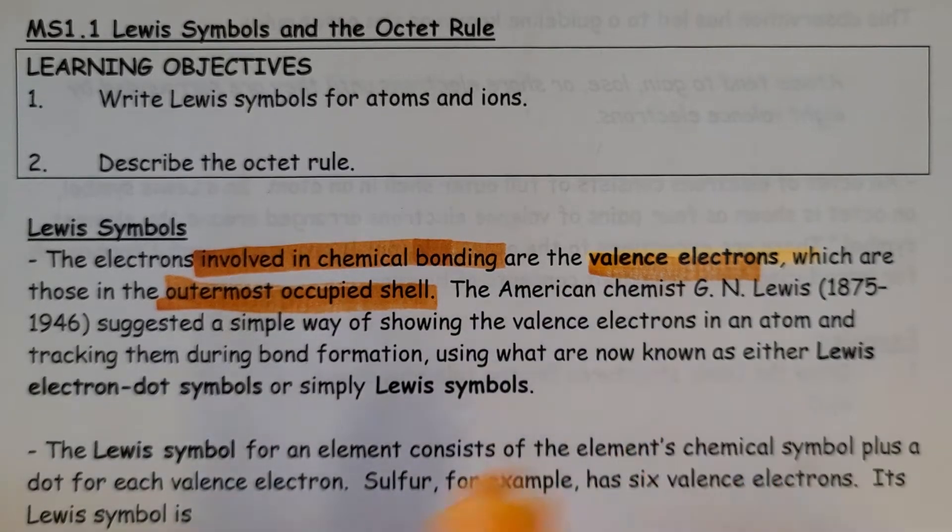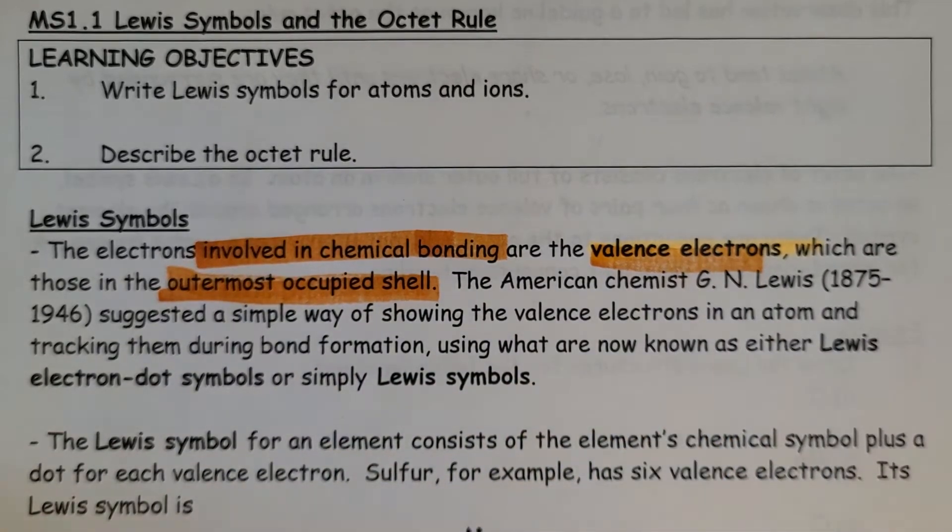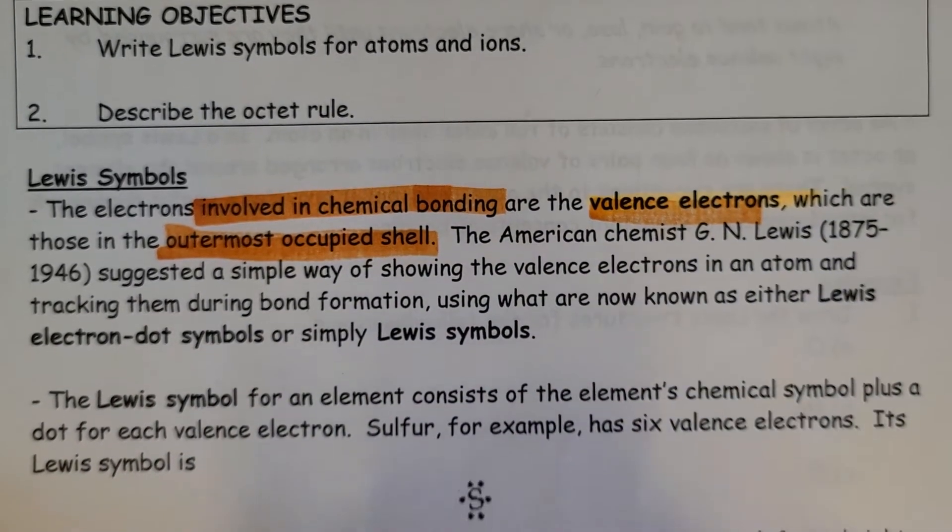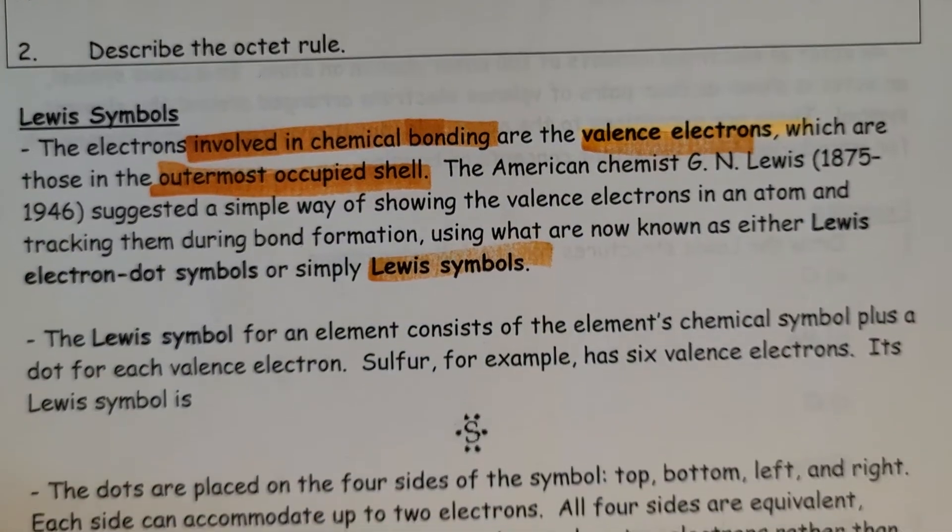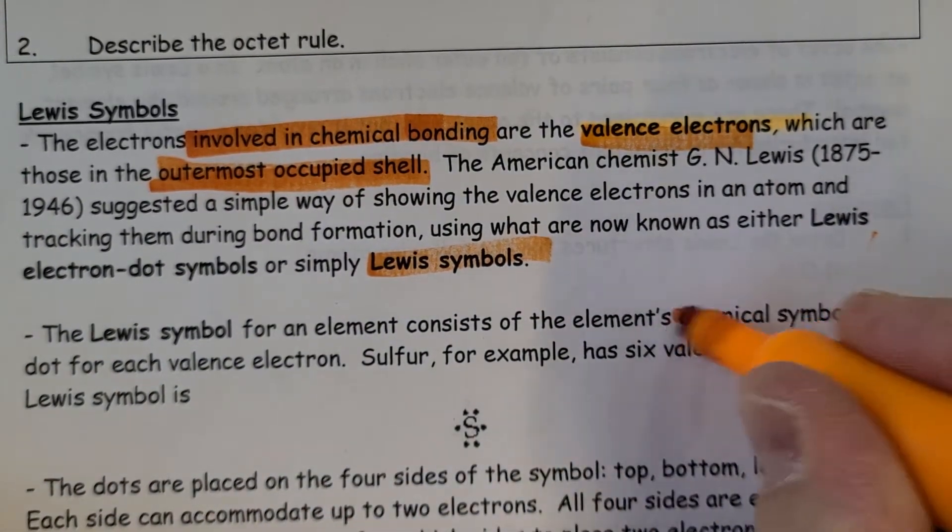The American chemist G. N. Lewis suggested a simple way of showing the valence electrons in an atom and tracking them during bond formation, using what are known as either Lewis electron-dot symbols or just simply Lewis symbols.